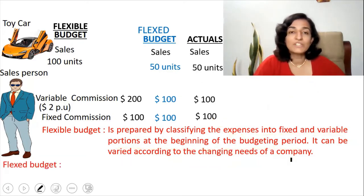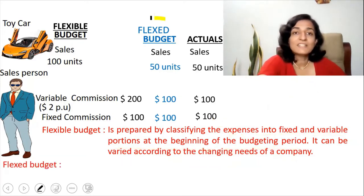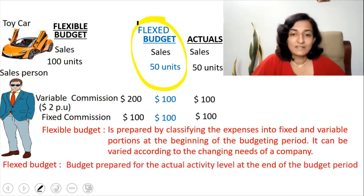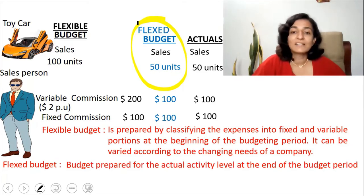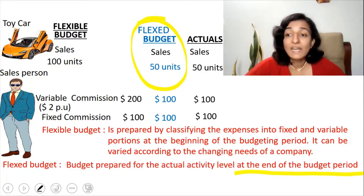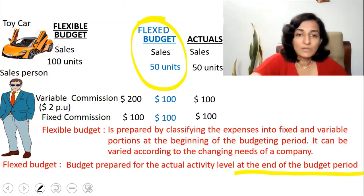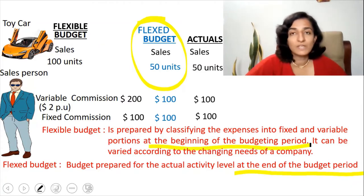A flexed budget is something that you prepare for the actual activity level — it is a budget prepared for the actual activity level at the end of the budget period. For the flexible budget, it was at the beginning of the budgeting period. So the distinction between the fixed budget, flexible budget, and flexed budget should now be clear.